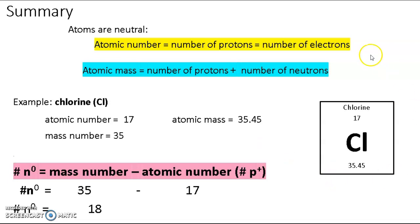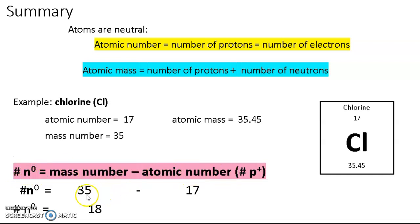Let's do an example here. We see chlorine here. The atomic number is 17, and the atomic mass is 35.45. The mass number is the whole number, which is 35. To find the number of neutrons, we take the formula and manipulate it to get: number of neutrons equals mass number minus atomic number. Mass number is 35 minus 17, which gives you 18 — the number of neutrons for chlorine.